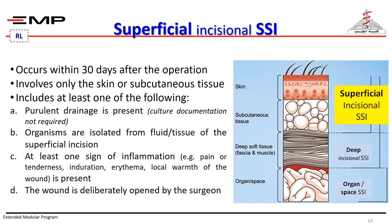Note that a wound is not considered a superficial incisional surgical site infection if a stitch abscess is present, if the incision is at an episiotomy or circumcision site, if it is a burn wound, or if the surgical site infection extends into the fascia or muscles. If pus is present, the wound should be opened and drained.